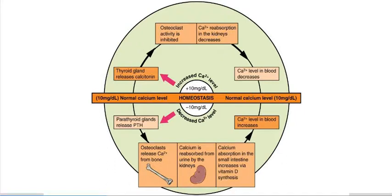One of the main functions of bone mentioned at the beginning of this chapter is the storage of minerals, and the main mineral we're talking about here is calcium in the form of calcium phosphate crystals. There's a homeostatic mechanism that regulates blood calcium levels — when there's too much, the calcium is stored in bone, and when there's not enough, calcium is released from bone.